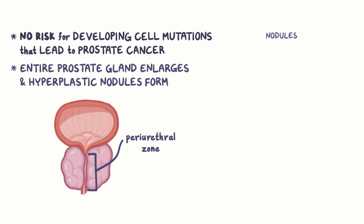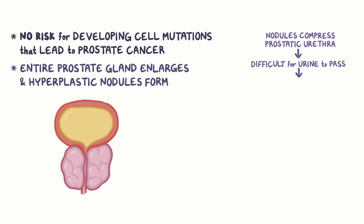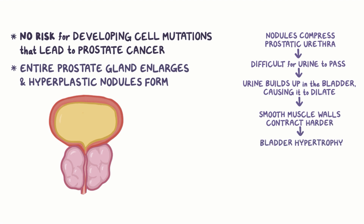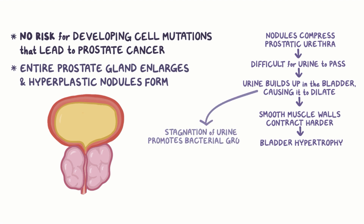When these nodules, or the prostate tissue itself, compresses the prostatic urethra, it becomes more difficult for urine to pass through it. So the urine builds up in the bladder, causing it to dilate. In response, the smooth muscle walls of the bladder will contract harder, and this leads to bladder hypertrophy, where the walls thicken and become easily irritated. Finally, the stagnation of urine in the bladder also promotes bacterial growth, and can lead to urinary tract infections.